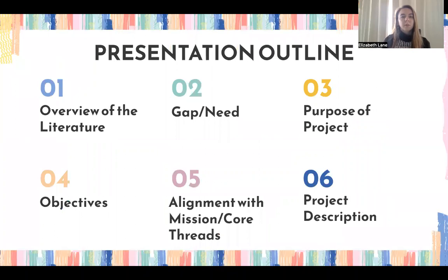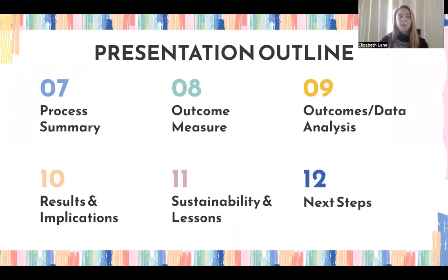To begin, I'll give you a little outline of what I will be talking about today. First we'll review the literature and talk about the gap I established in the literature and the need that came from that. I'll talk about the purpose of my project and the objectives I developed, as well as how my project aligns with the mission and core threads of the Rocky Mountain College OTD program. I'll give a brief project description and a summary of the process, talk about my outcome measure and data analysis, the results and implications, the sustainability of my project, the lessons I learned, and the next steps.